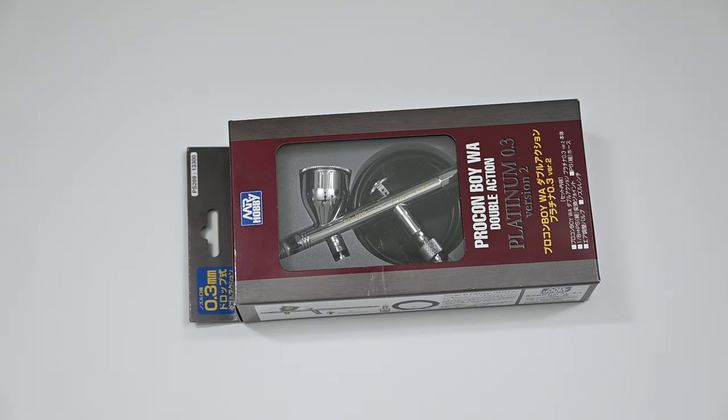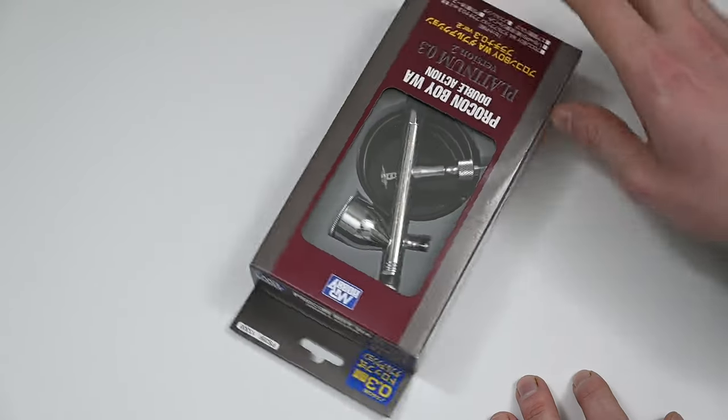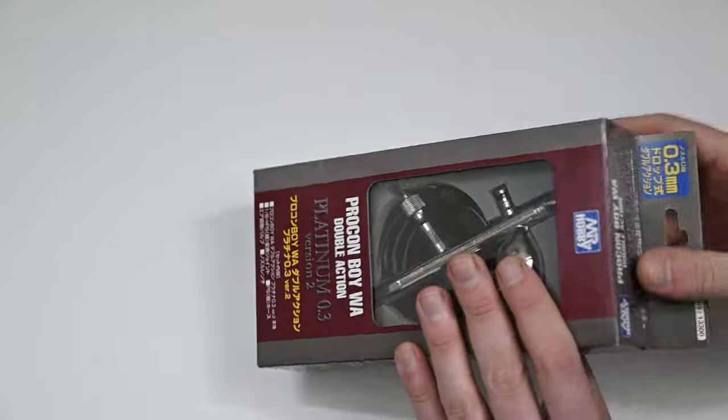First, let's take a look at what comes in the box, because you get some pretty nice things with the PS289. Officially from the box, this airbrush is called the Procon Boy WA Double Action Platinum 0.3 Version 2. A really catchy name there, but its model number is the PS289, so that's what I'll be calling it throughout this video.